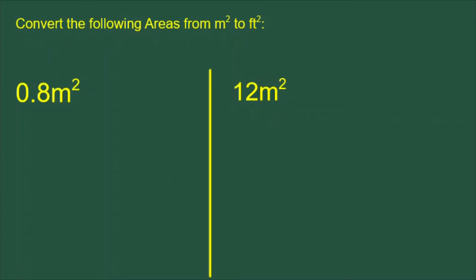To do that, we need a conversion factor. The conversion factor we're using is that one foot squared is equal to 0.092903 meters squared.